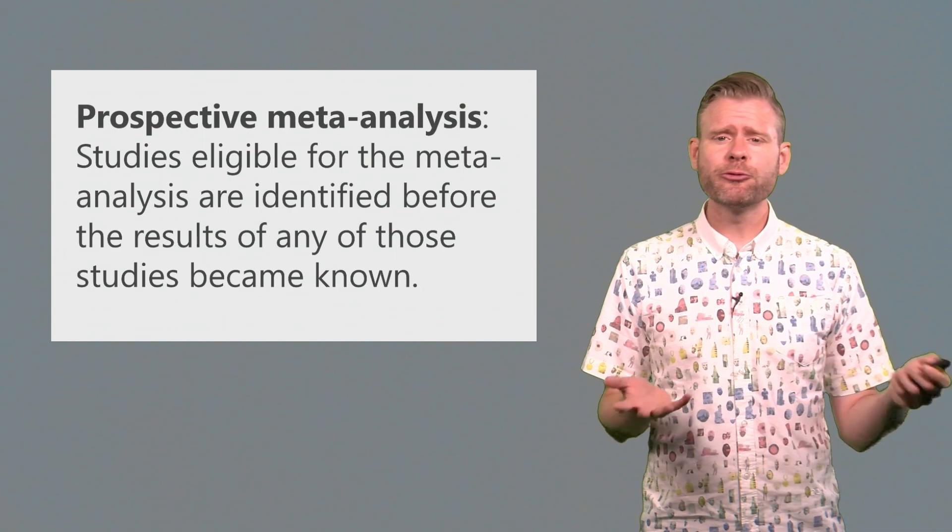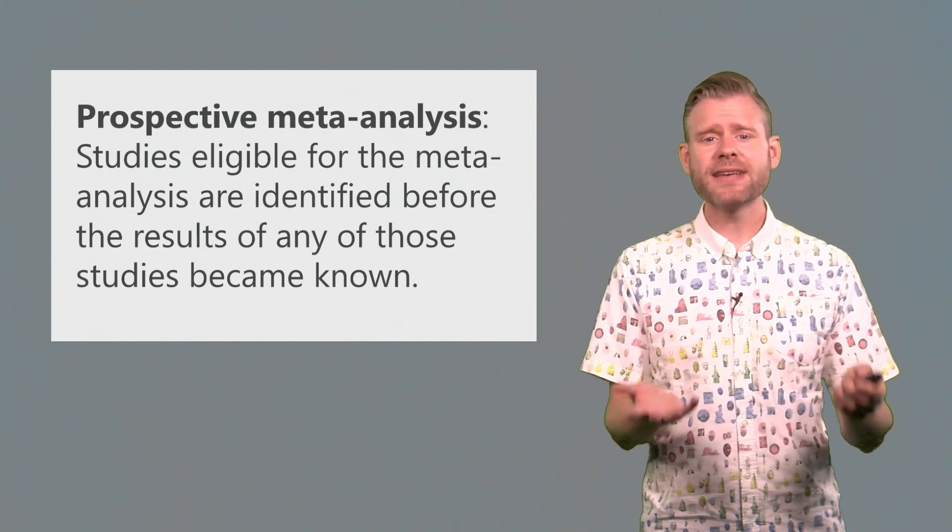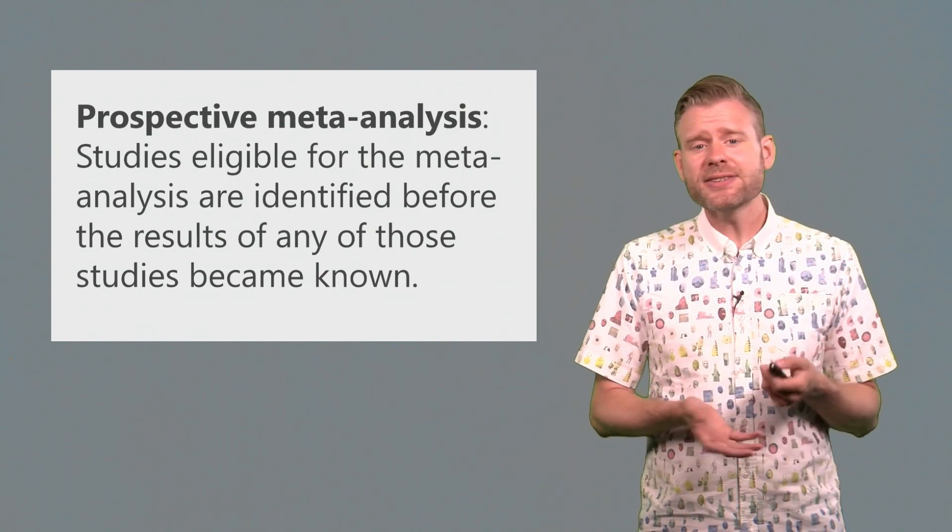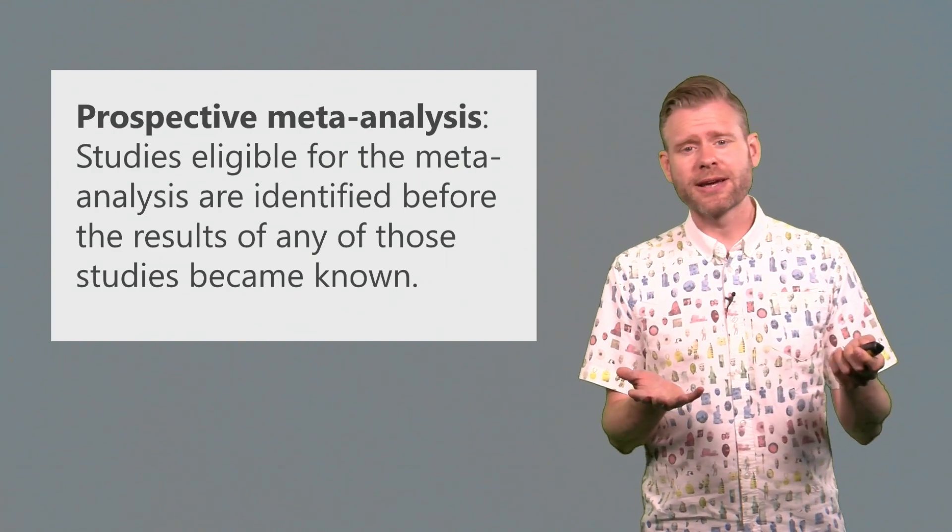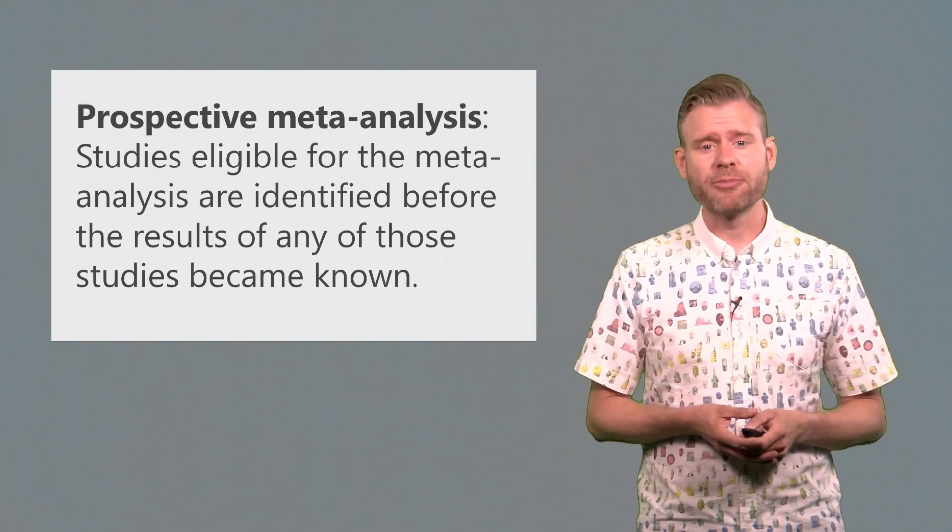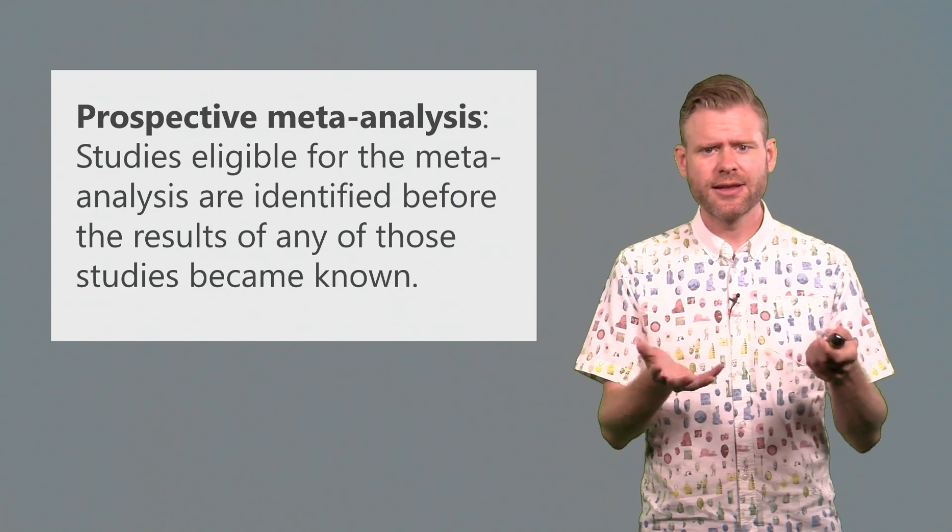Very often however, we perform meta-analysis on the scientific literature. And in these cases we do need to think about publication bias or other sources of bias in the sets of studies that we can find.